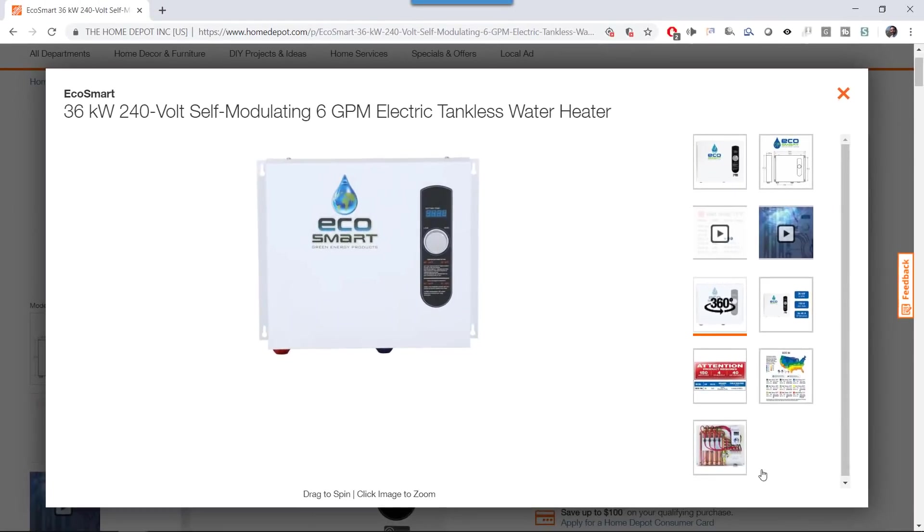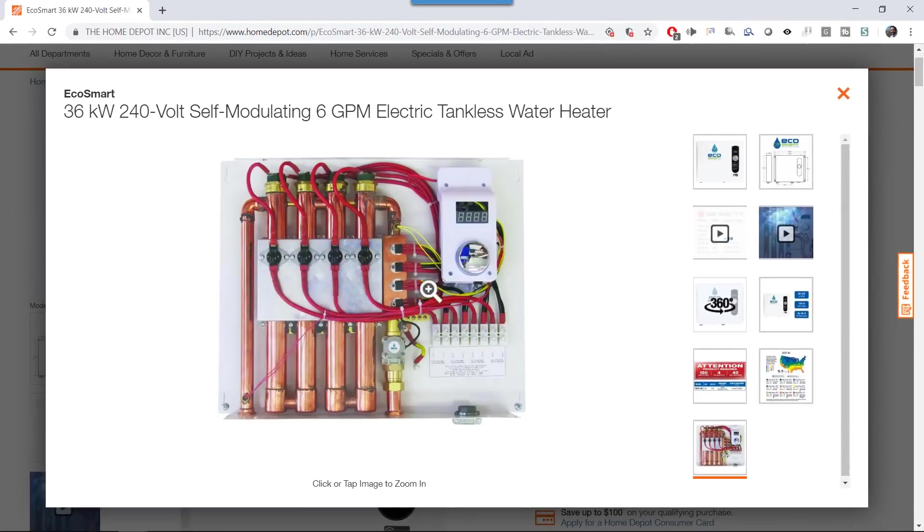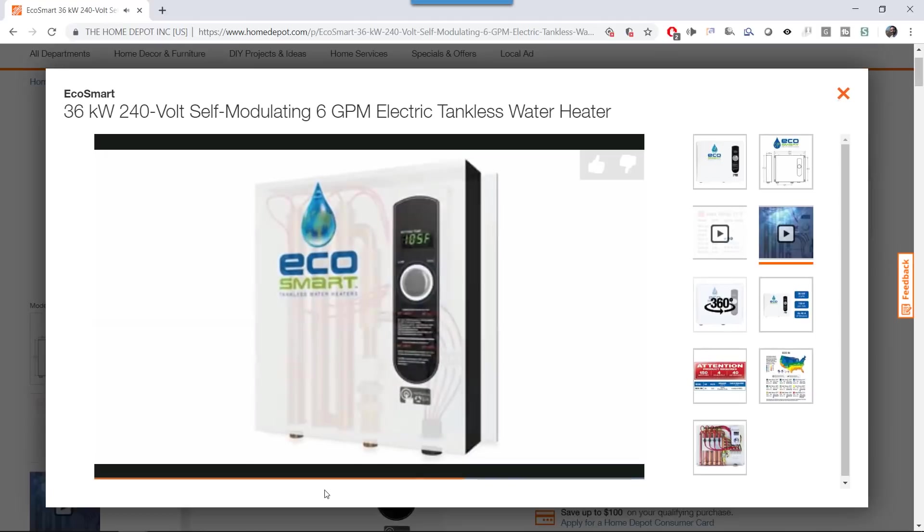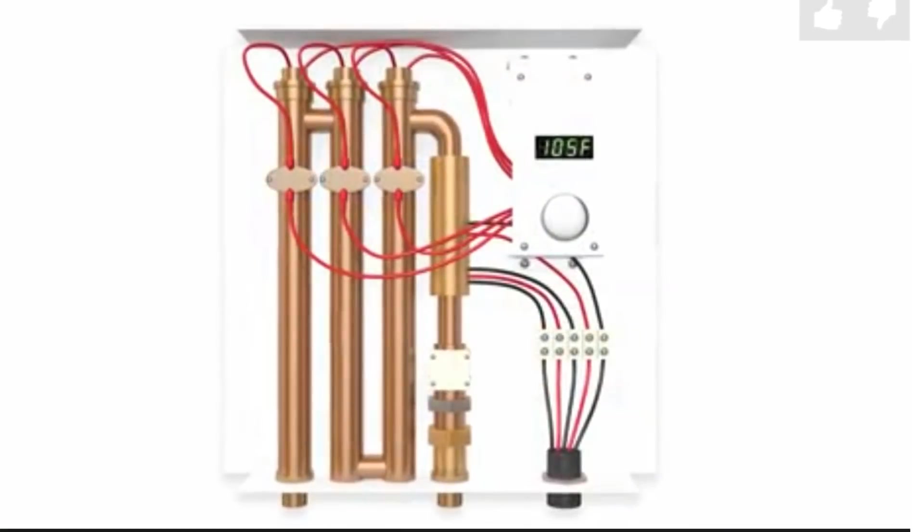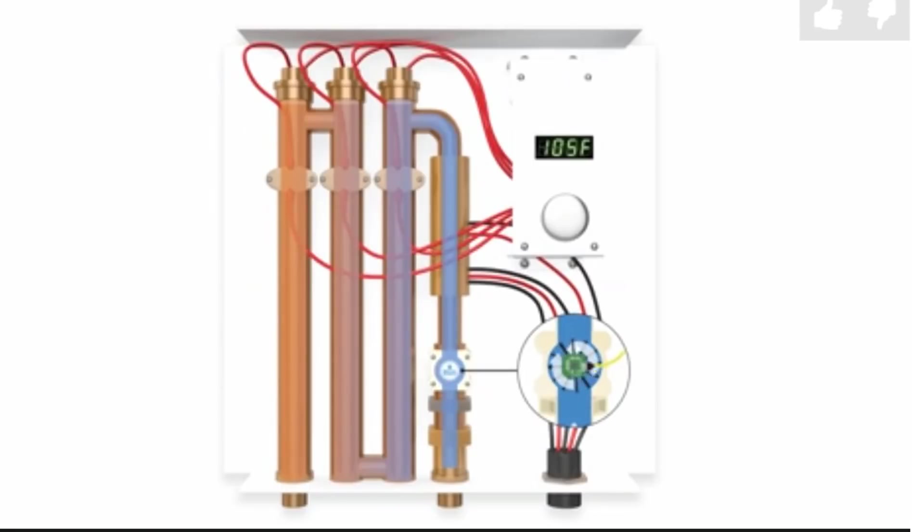In this episode I'm hooking up our EcoSmart 36 kilowatt hot water heater. Eventually this will provide hot water on demand for this half of the house, but for now I just want some warm water for making stucco this winter.